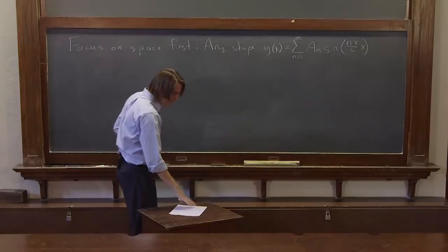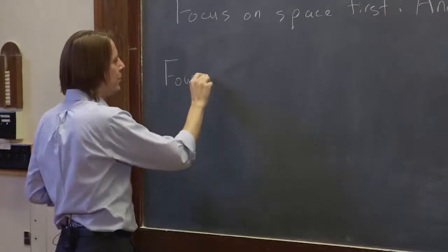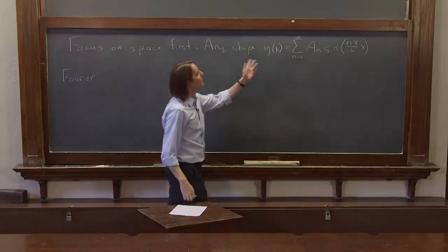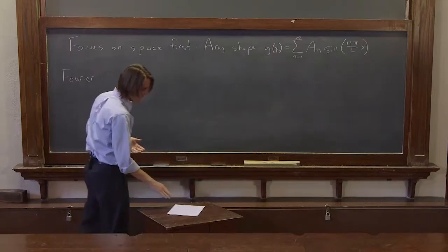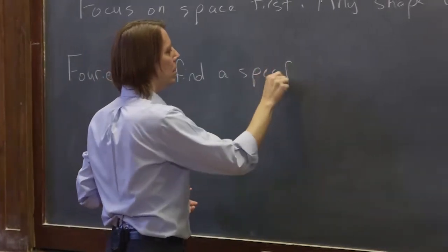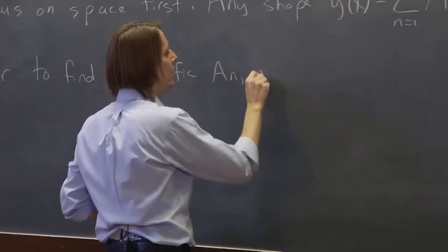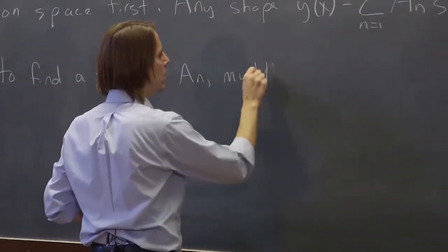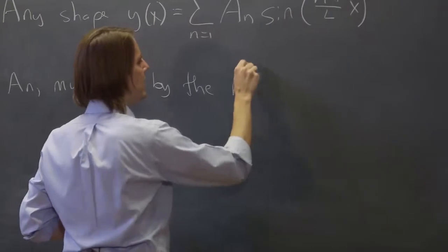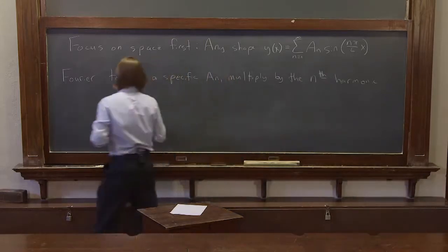So Fourier said, so here is the reason he's famous. And the greenhouse effect as well, but mostly this, is he didn't just say this and give us infinite unknowns in one equation. He said, do this: To find a specific A_n, multiply by the nth harmonic and integrate.